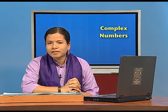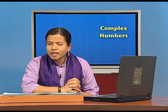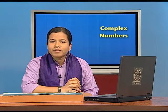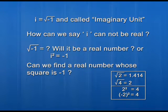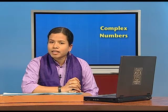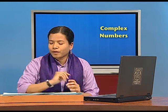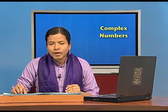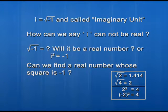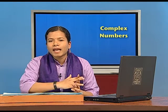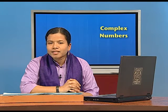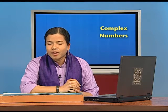Obviously not. The square of a real number is always a positive number. If we take the square of a positive real number, it is positive, and if we take the square of a negative real number, it is also positive. For example, square of 2 is 4, and square of minus 2 is also 4. So in the case of real numbers, whether positive or negative, we always get a positive square. Since we cannot find a real number whose square is a negative number like minus 1, we can say that i can never be a real number.